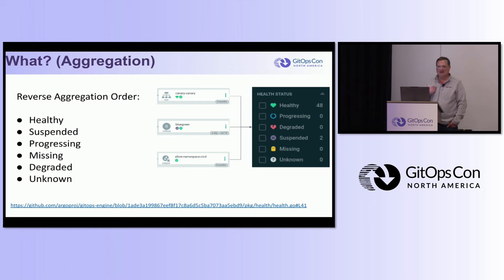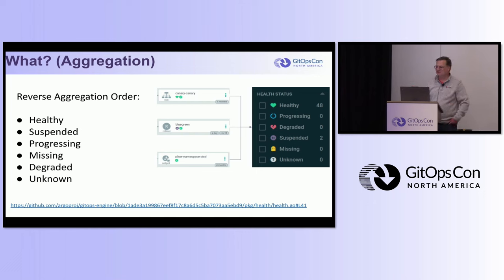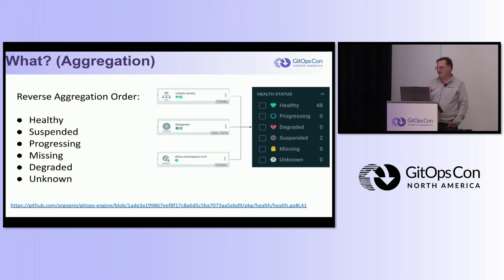I always thought I knew degraded was probably the worst, but I never really understood what the actual order was. I looked at the Argo CD docs and there's no documentation of what that order is - you have to dig into the source code. So here's what the order is: unknown is actually surprisingly the worst health status, then degraded, then missing, then progressing, then suspended, then healthy as the last.